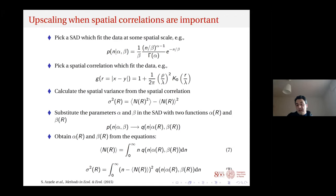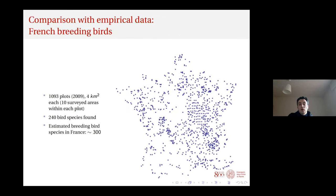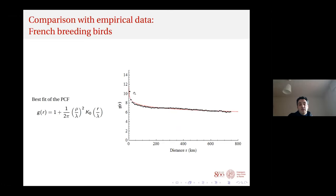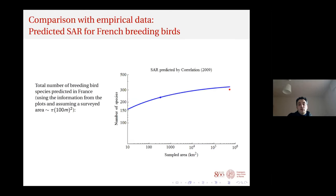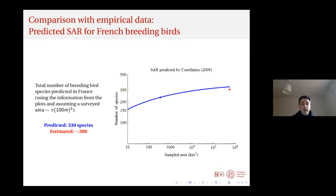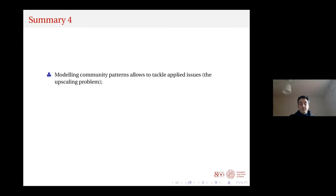In some situations α(r) and β(r) can be found exactly, enabling predictions. Applied to breeding birds with around one thousand plots in France: best-fit the data with the chosen function, then predict the total species richness. France is expected to have around 300 species of breeding birds, and with this model — taking correlations into account — we predict approximately 330 species. This is the upscaling approach.